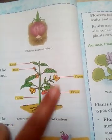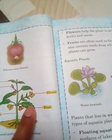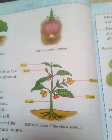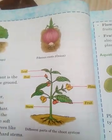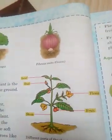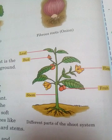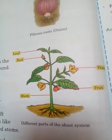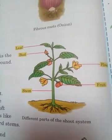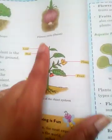Leaves are also part of the shoot system. Leaves are thin, flat, and green parts of the plant. They are green because of the presence of chlorophyll. Leaves are called the kitchen of the plant because they prepare food through the process of photosynthesis, in which chlorophyll and glucose are converted into carbohydrates. That explanation is your assignment.